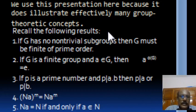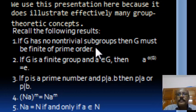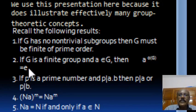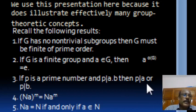First, we recall the following results to prove two main theorems. If G has no non-trivial subgroups, then G must be finite of prime order. That is, if singleton {E} and G are the only subgroups of G, then the order of the group is finite and the order is a prime number. If G is a finite group and A is an element of G, then A to the power of order of G equals E. If P is a prime number and P divides the product A times B, then P divides A or P divides B. So if P divides the product of two integers, then P divides at least one of them.